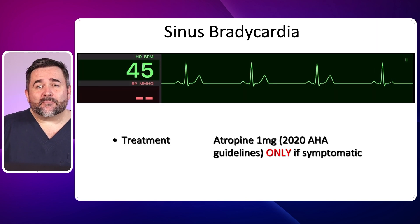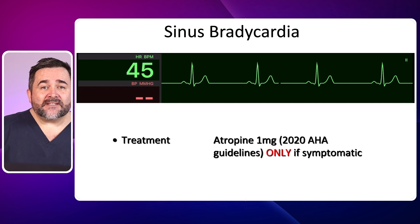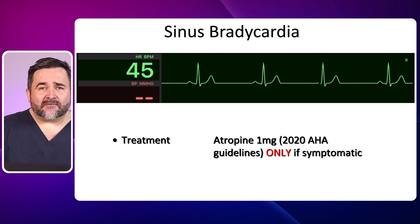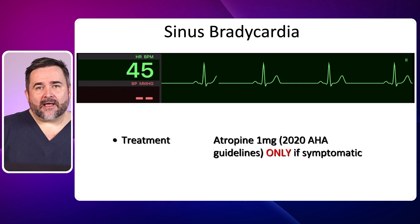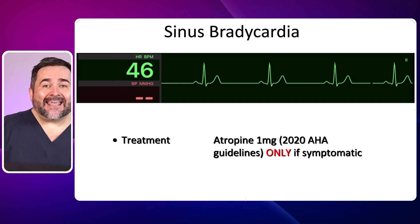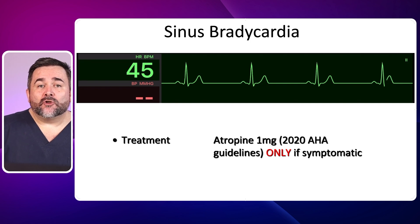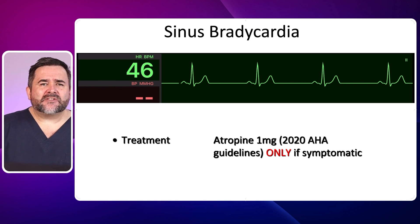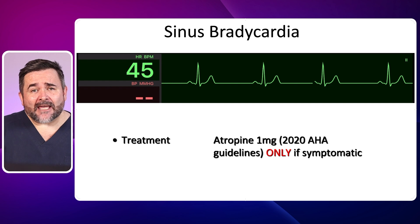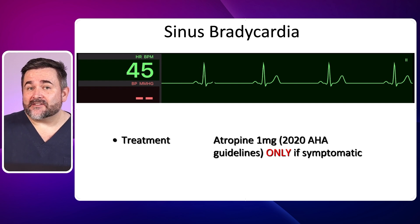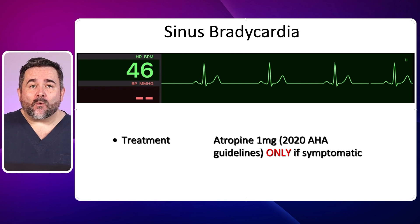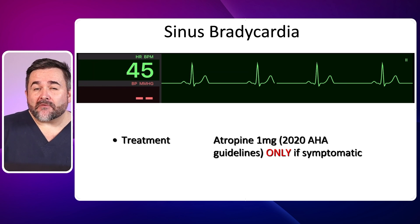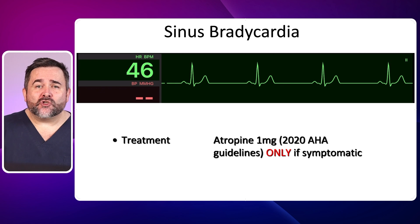Here we see a sinus bradycardia at a rate of 46 beats per minute. Sinus bradycardia with rates greater than 50 beats per minute may be well tolerated by healthy adults. Athletes may routinely be in sinus bradycardia due to an optimal stroke volume that requires a lower heart rate. It may also be associated with vagal stimulation or due to sick sinus syndrome. Treatment is only required for symptomatic sinus bradycardia, where you might see shortness of breath, chest discomfort, and low perfusion for example.